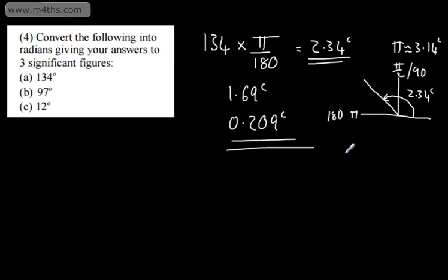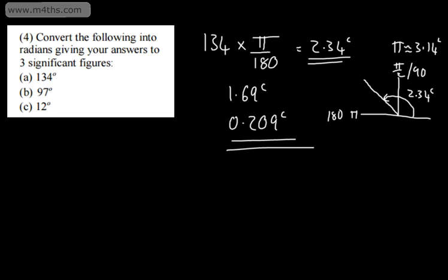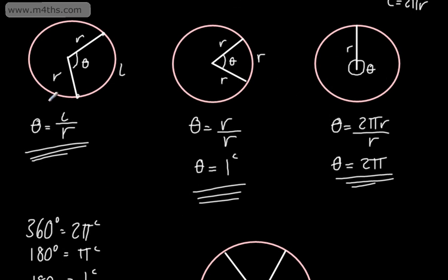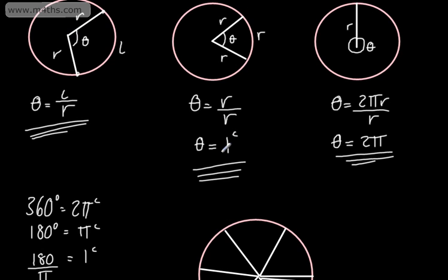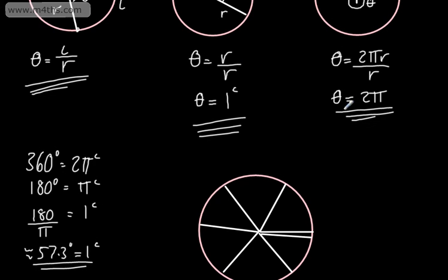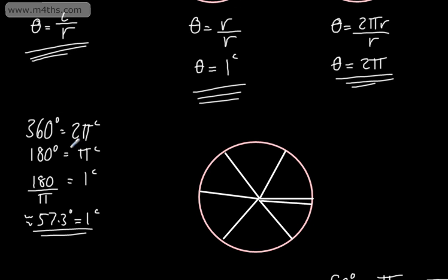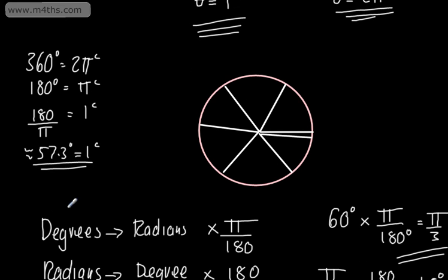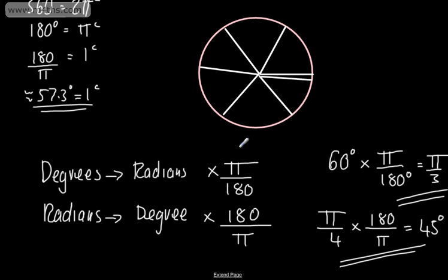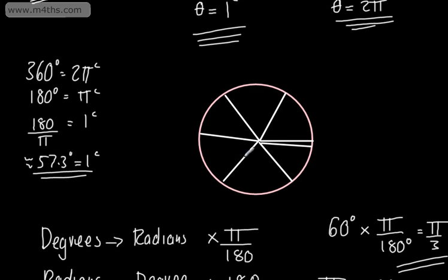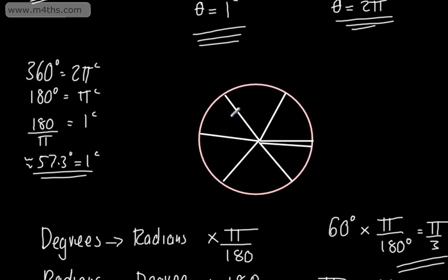So there we go — a brief introduction to radians. In later videos, we will look at arc lengths and areas, but hopefully that's given you some idea. To recap: the angle in radians is the arc length divided by the radius. If we have radius r and arc length r, that gives 1 radian. 2π radians is a complete revolution, so 2π equals 360°, π equals 180°, and 1 radian is 180 divided by π, which is about 57.3°. Convert degrees to radians by multiplying by π/180, and radians to degrees by multiplying by 180/π.